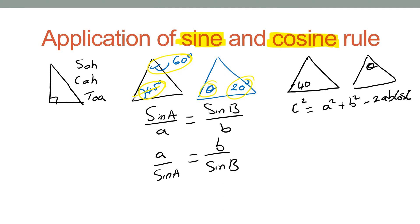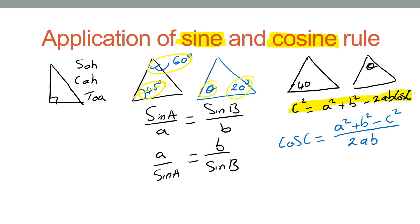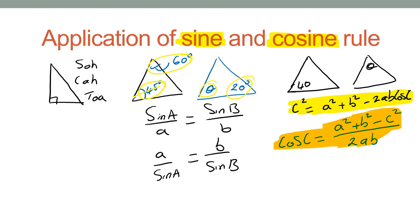If you rearrange this, it can be written as cos C = (a² + b² − c²) / 2ab. The first form is for finding the side length, and the second is for finding the angle. If you are unsure how these equations are derived, please watch my videos on the cosine rule.